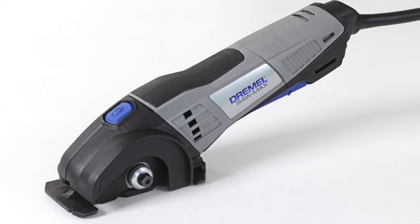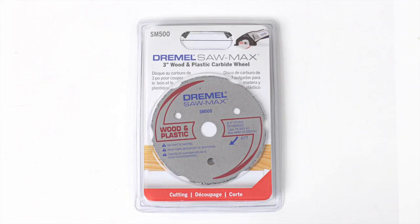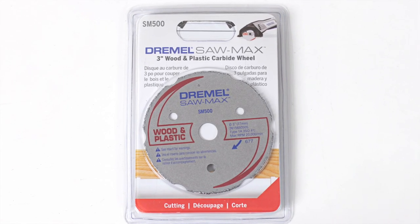We'll first cut the frame pieces using the Dremel Saw Max fitted with the SM500 carbide wheel designed to cut wood and plastic.